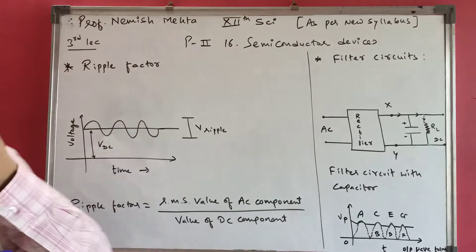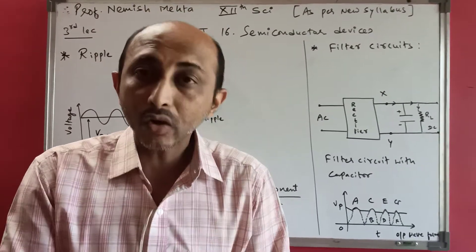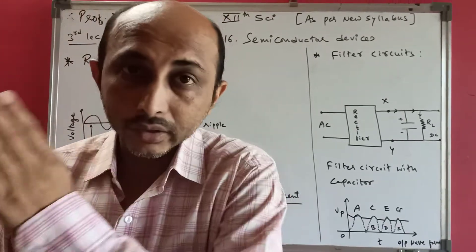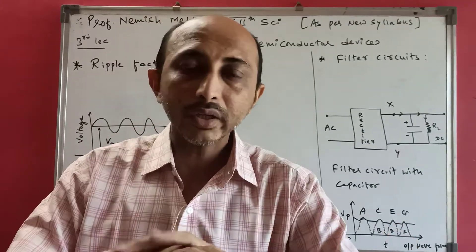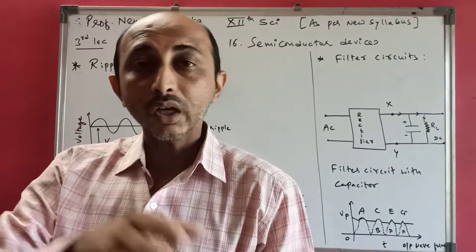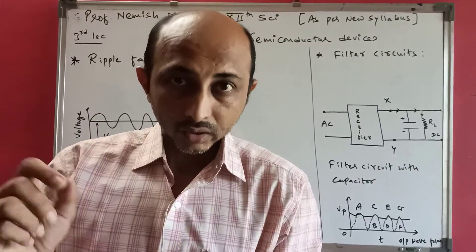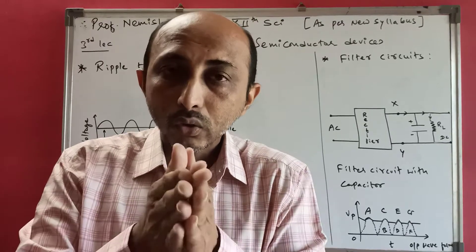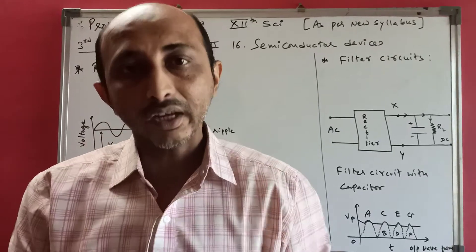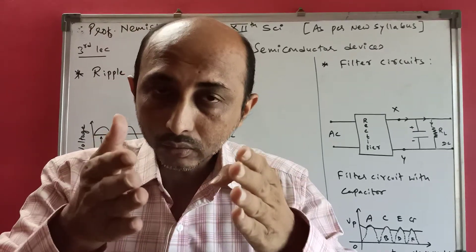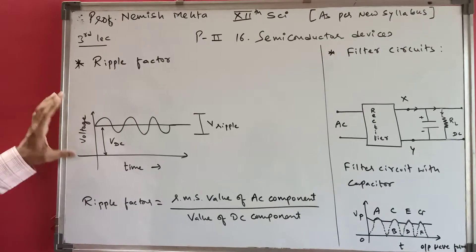Now we are going to see ripple factor. As we know in half wave or full wave rectifier, AC component is converted into DC component. However, no device is so efficient that it converts 100% AC into 100% DC. Some part of AC is still present in DC after conversion.